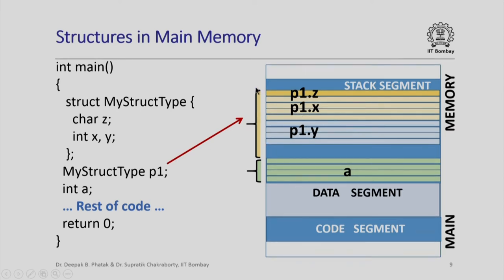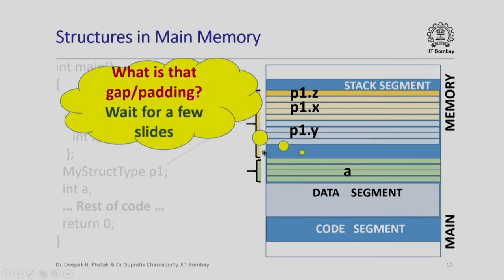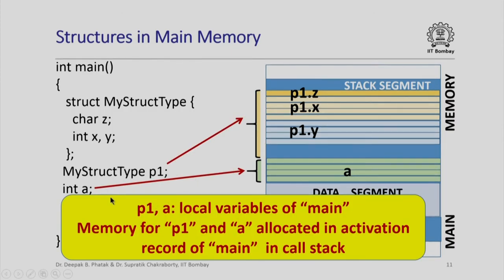Note that this is the amount of memory allocated for p1, whereas p1.z required one byte, and p1.x and p1.y required four bytes each. So there is still some gap here. If you are wondering what that gap or padding is, let us just wait for a few slides. For the time being, let us note that since p1 and A are both local variables of main, memory for both p1 and A have been allocated in the activation record of main in the call stack which resides in the stack segment.